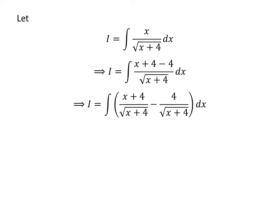The integrand can be expressed as the difference of two fractions. So i is equal to integral of x plus 4 upon square root of x plus 4 minus 4 upon square root of x plus 4 with respect to x. Cancelling out the common factor square root of x plus 4 in the numerator and denominator of the first fraction gives us i is equal to integral of square root of x plus 4 minus 4 upon square root of x plus 4 with respect to x.